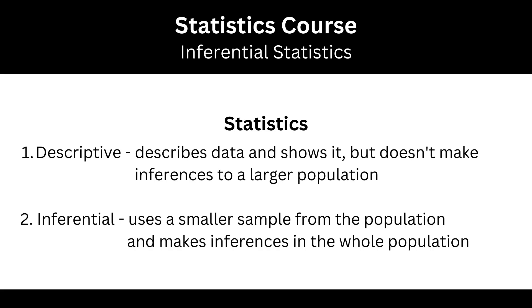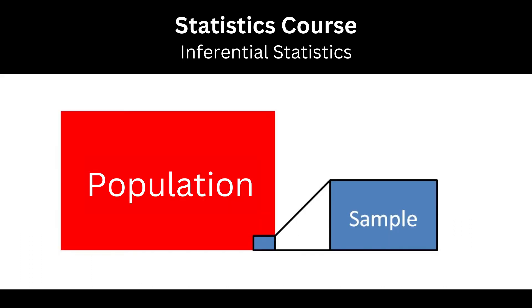With inferential statistics, the second branch, here we are dealing with a sample from a population, because it is too large, and making inferences from the sample to the population.